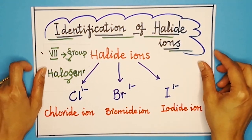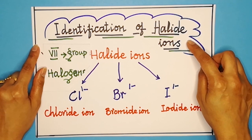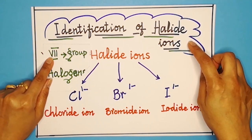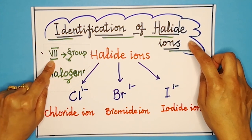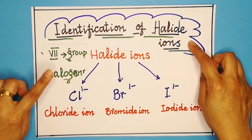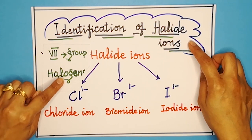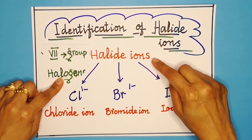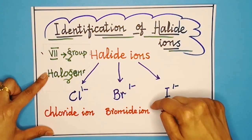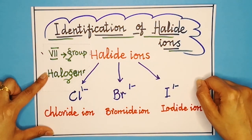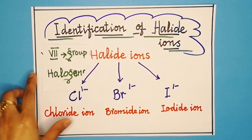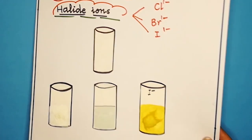Identification of halide ions: the Group 7 elements in the periodic table are called halogens, and the ions of halogens are called halide ions — specifically chloride ions, bromide ions, and iodide ions. In order to identify these ions, we will do a small test in the laboratory.